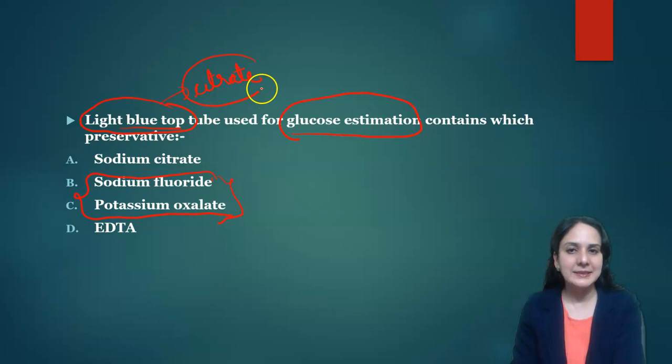Because of recent studies, the citrate buffer decreases the pH, that is increases acidity, and this acidic condition inhibits the enzyme hexokinase as well as phosphofructokinase of glycolysis. So now according to recent studies, light blue top tubes, citrate containing tubes, are preferred for glucose estimation. So the answer was A.